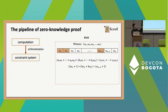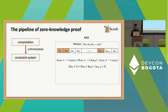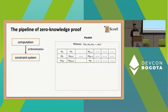In R1CS you can access any witness cell using this linear combination. The limitation is that you can only have one multiplication, so it's very good for programs with large linear combinations but few multiplications. For example, you can access cells like omega_1, omega_2, and omega_{n-2}. You can basically access any witness cell using R1CS.